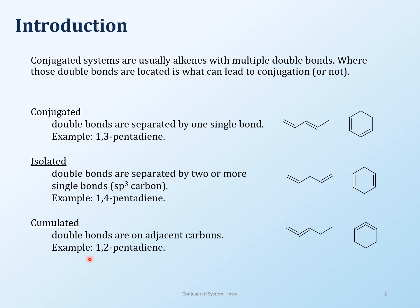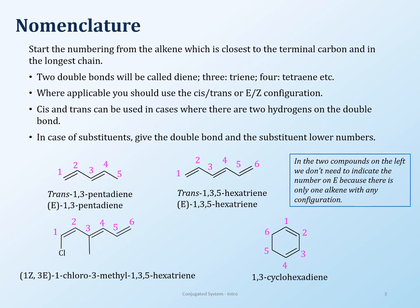The last kind of system is what's called cumulated — where the double bonds are right next to each other. I've shown these in cyclic systems as well, because conjugation is not limited to straight chain compounds; you can have them in cyclic systems also.